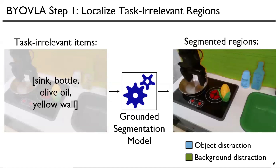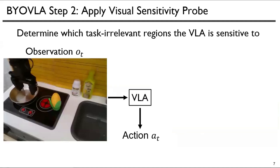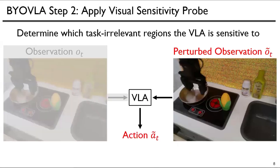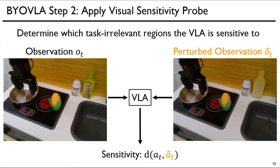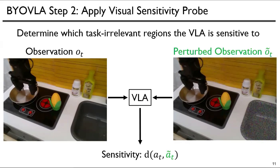In this work, we distinguish between object and background distractions. To determine which task-irrelevant region the VLA is sensitive to, we first sample actions given the original observation to get action A. We then perturb a specific region and run the VLA to get action A-tilde. Sensitivity to that area is quantified by measuring a difference D between the two actions, and we repeat this process for all regions from step 1.